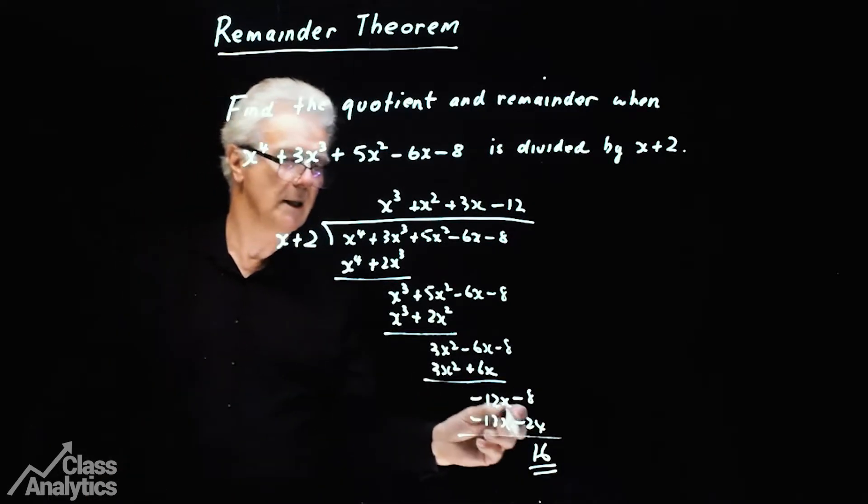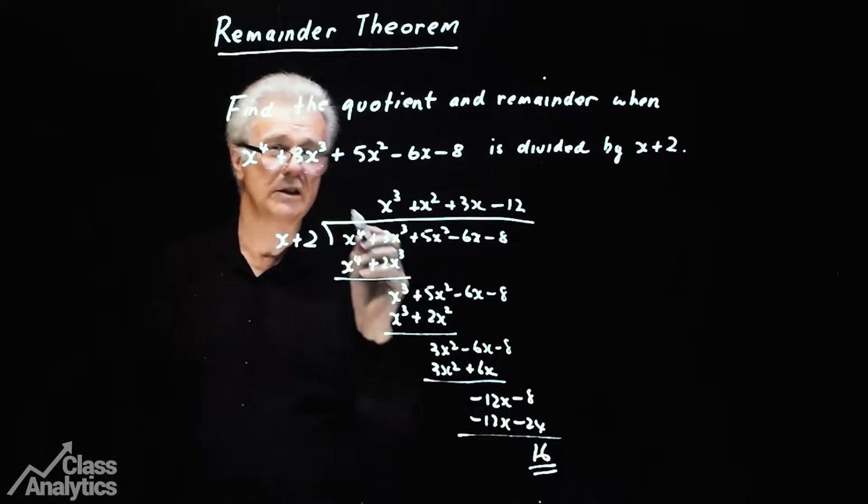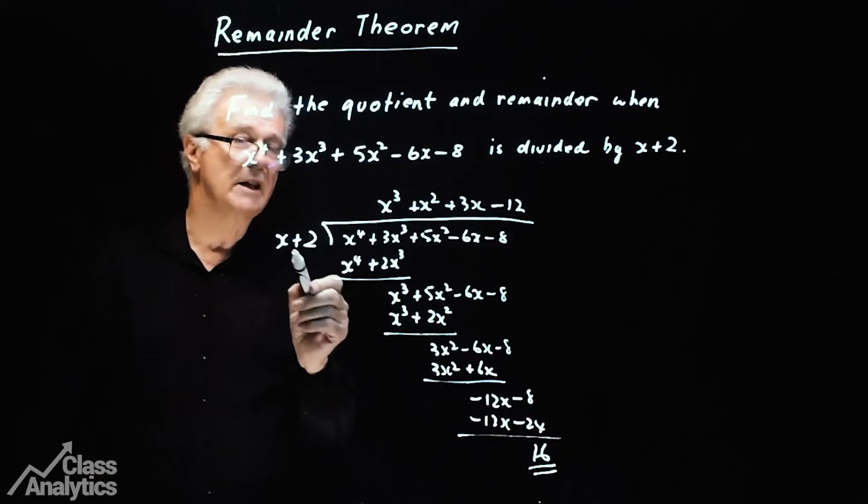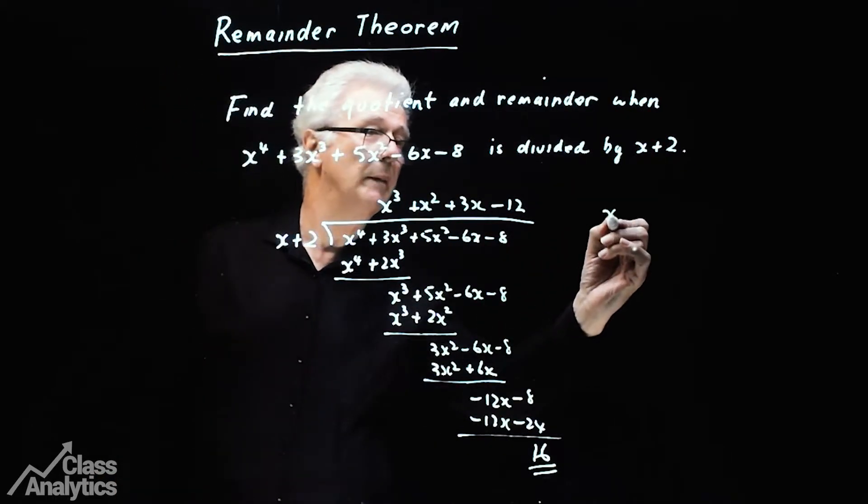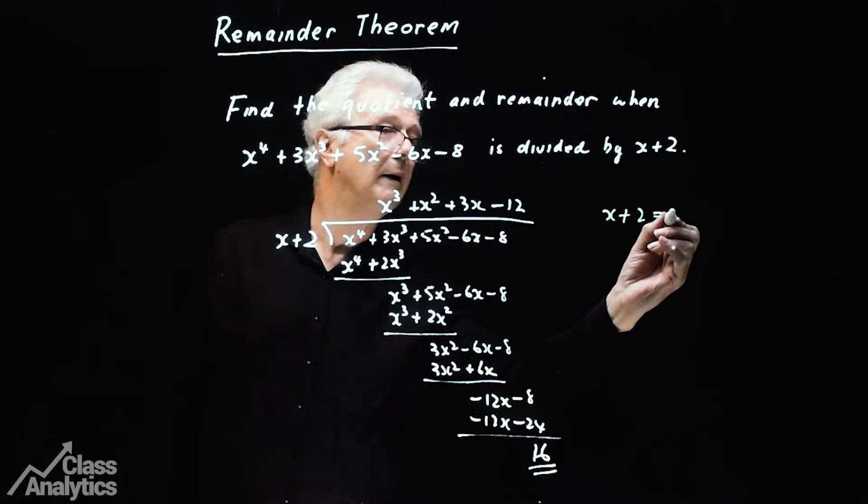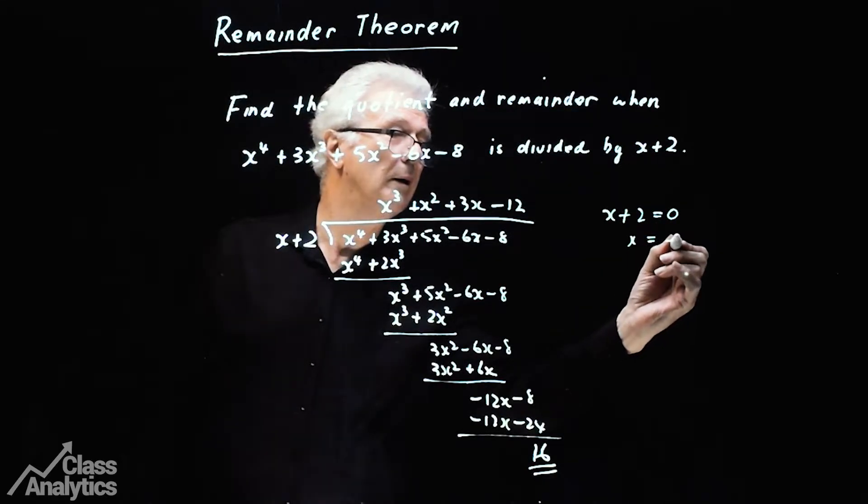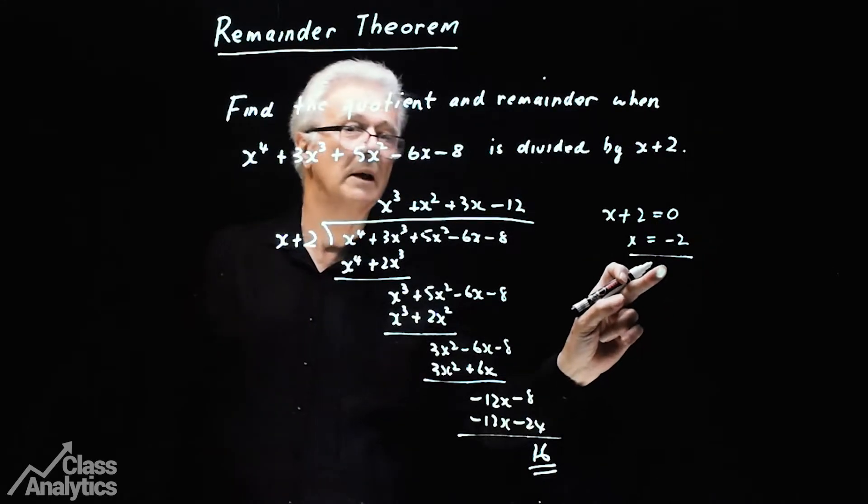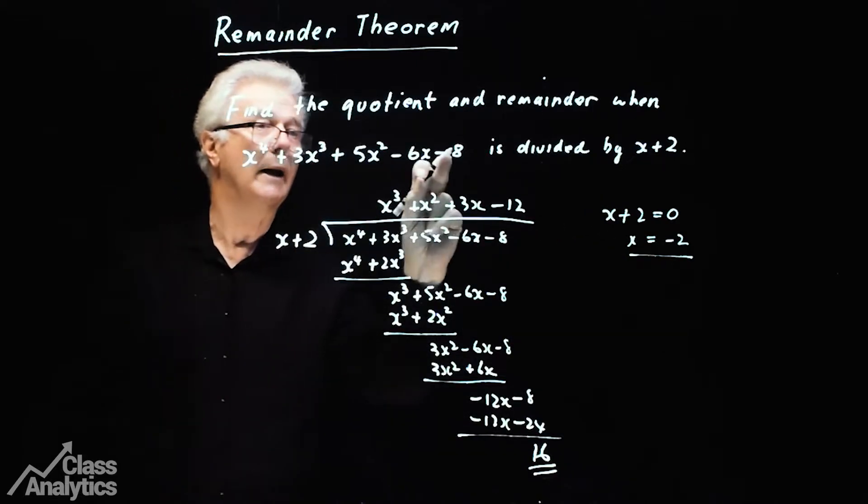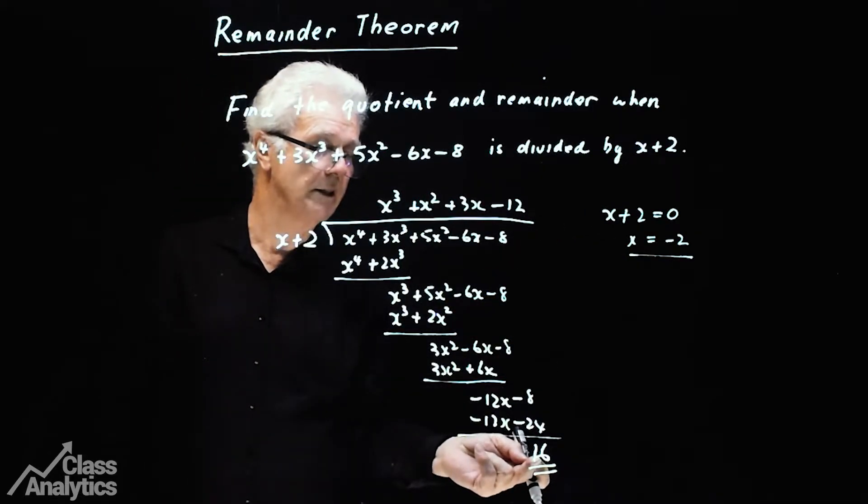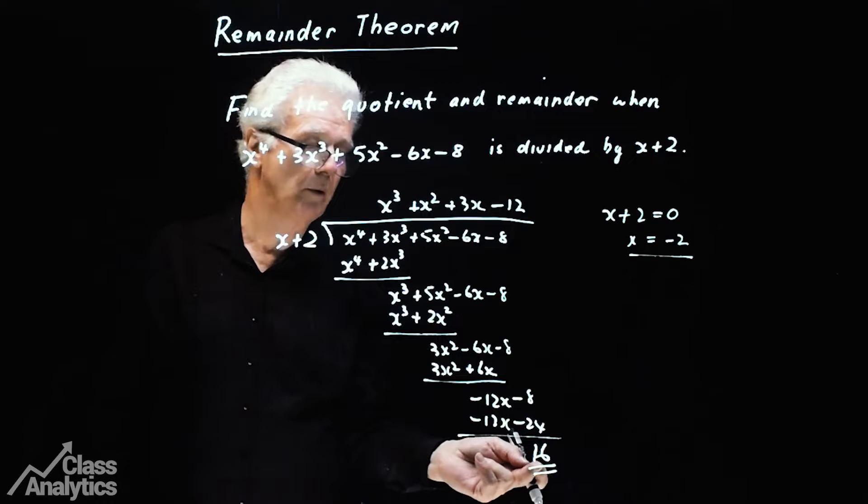Now what we could have done to find the remainder, we would have simply substituted in the value here, because x plus 2, remember, is the factor. So if we let that equal minus 2, we would have substituted that into here, and that would have given us the remainder of 16. And that would be the next question we'll look at.